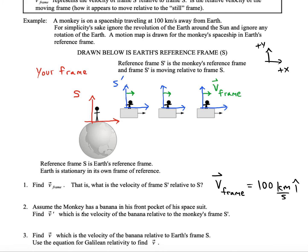Now it says, assume the monkey has a banana in his front pocket of his spacesuit, find V-prime, which is the velocity of the banana relative to the monkey's frame, S-prime. So the idea here is that his frame goes with him wherever he goes, and the banana goes with him wherever he goes, too. So is the banana really moving relative to his coordinate system? The answer is no. And so you'd have to say, then, that V-prime here is actually zero.